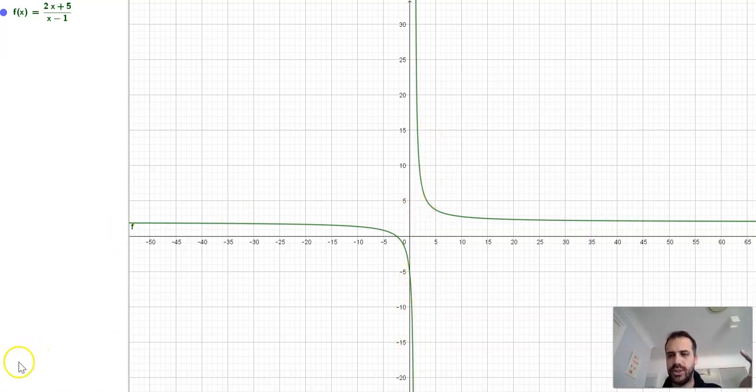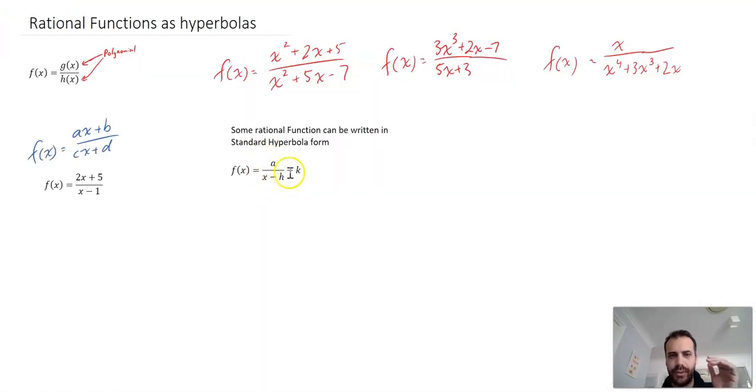Which means that we should be able to rewrite it in the standard form of a hyperbola, which is of course a over x minus h plus k, where k will be the vertical shift and h will be the horizontal shift. So all we need to do is take 2x plus 5 over x minus 1 and rewrite it as a over x minus h plus k.